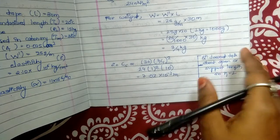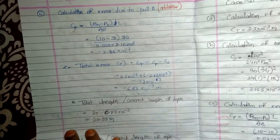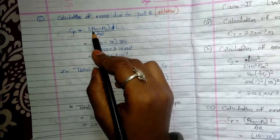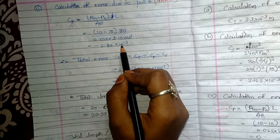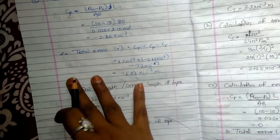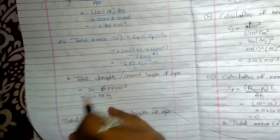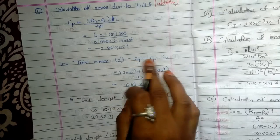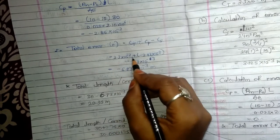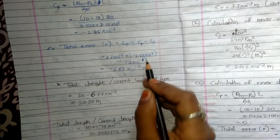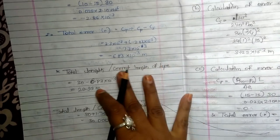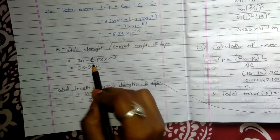Span is 1. For the pull error, the formula is (PM minus P₀) × L / (AE), giving minus 2.86 × 10⁻³ meters — this is additive. Total error equals CT plus CP minus CS: 3.3 × 10⁻³ plus (−2.86 × 10⁻³) minus (−7.03 × 10⁻³) equals 6.83 × 10⁻³ meters. Therefore, the total corrected length is 30 minus 0.00683, which equals 29.99 meters.